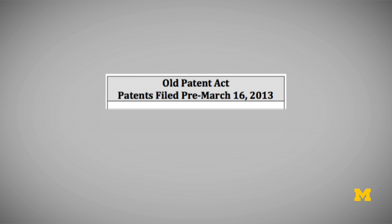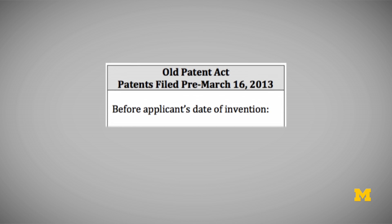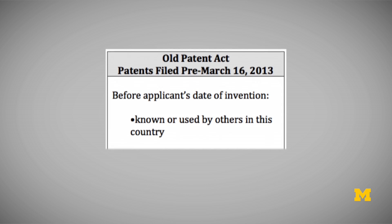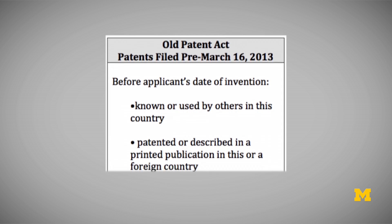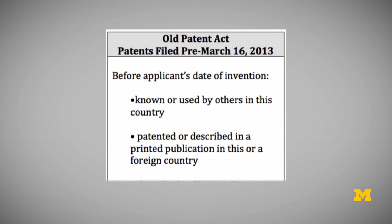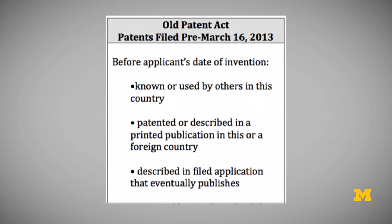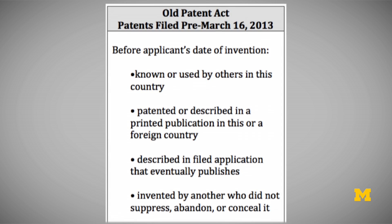Let's first look at what we'll call the Old Patent Act — United States Patent Law covering applications filed prior to March 16, 2013. In Section 102 of the Patent Act, it listed various categories of information that would count as prior art. That included any information created before the applicant's date of invention that made the invention known or used by others in this country, or made the invention patented or described in a printed publication in this or a foreign country, or that described the invention in a filed patent application that eventually published, or that caused the technology to be invented by another who did not suppress, abandon, or conceal it.